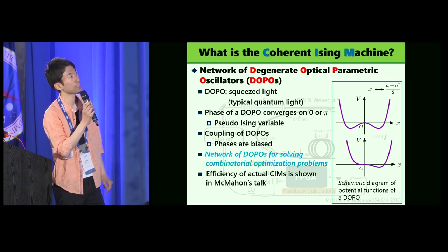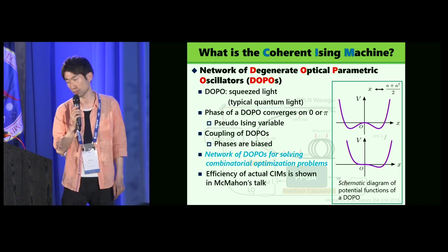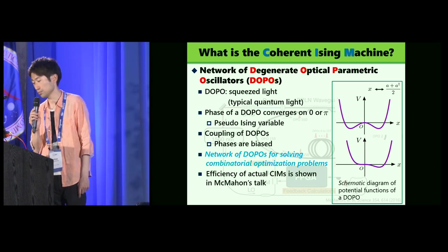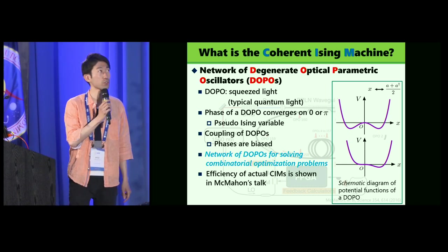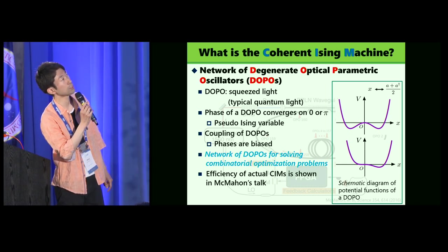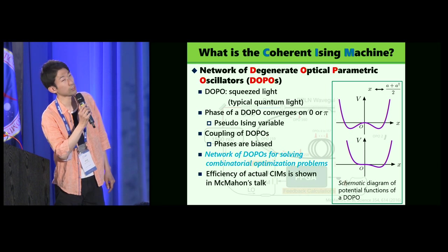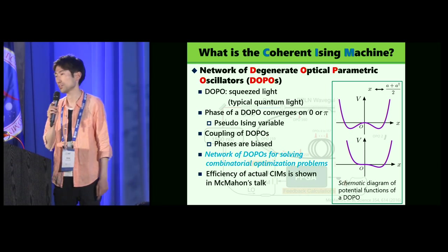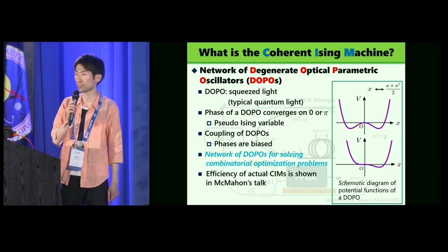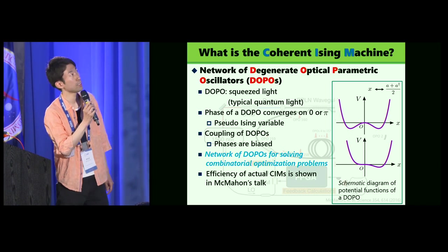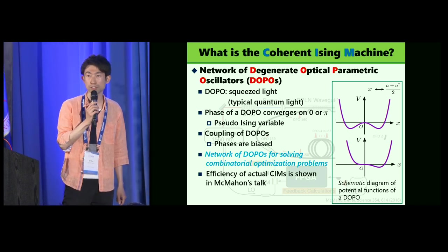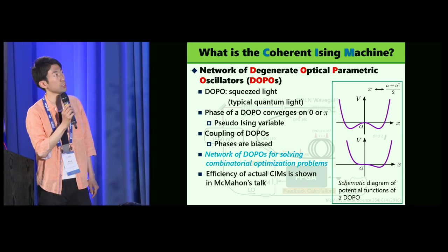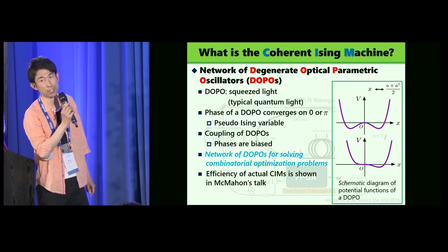That is a schematic diagram of potential functions of DOPO, and x denotes the quadrature amplitude. Roughly speaking, the positive x correspond to the phase zero, and negative x correspond to phase pi. The function is symmetric, so we obtain these at phase zero or pi at random.